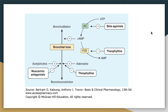Beta-agonist or sympathomimetic drugs increase intracellular cAMP levels, which causes smooth muscle relaxation, whereas theophyllines prevent the degradation of intracellular cAMP, which can also cause smooth muscle relaxation. Acetylcholine is a bronchoconstrictor, so muscarinic antagonists or anticholinergic drugs antagonize the effect of acetylcholine and reduce the bronchial tone, thereby causing bronchodilation.